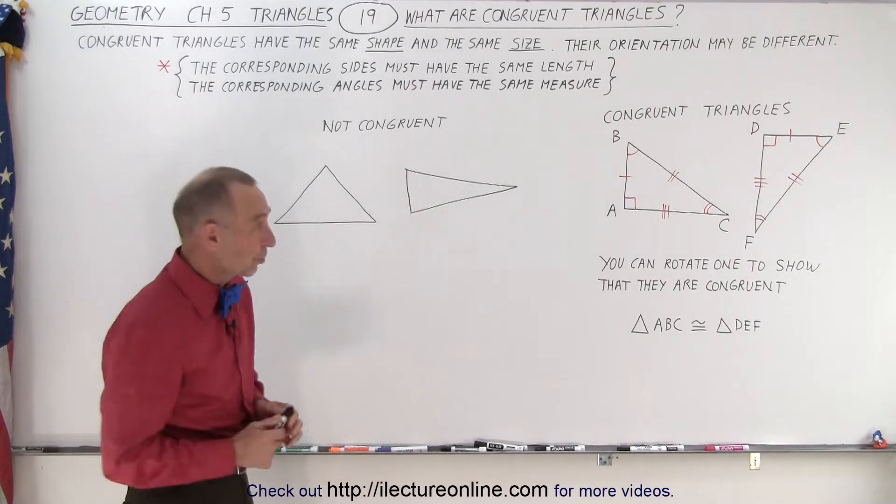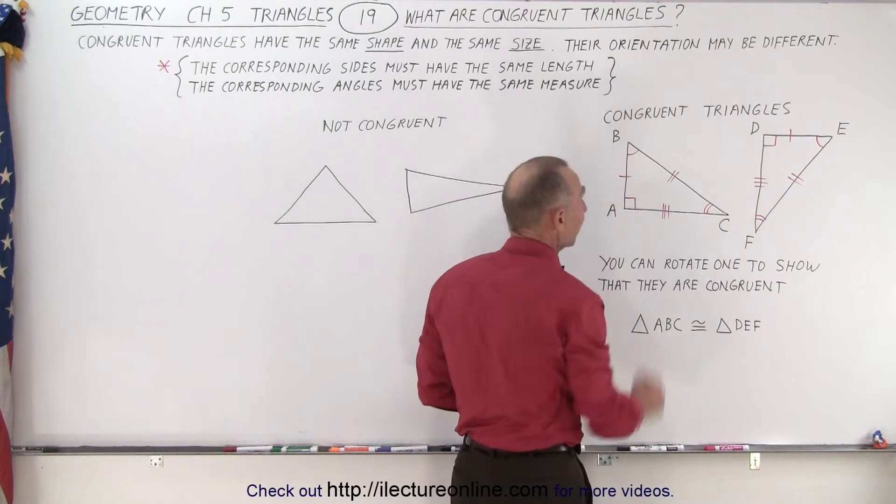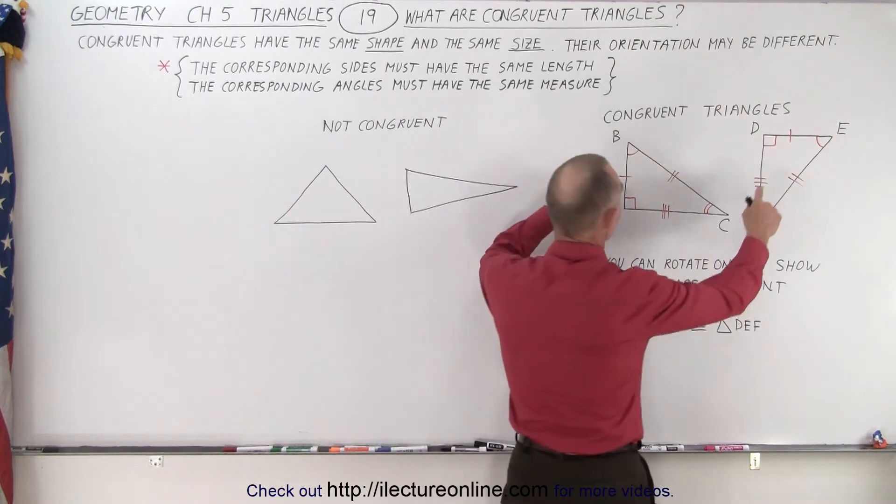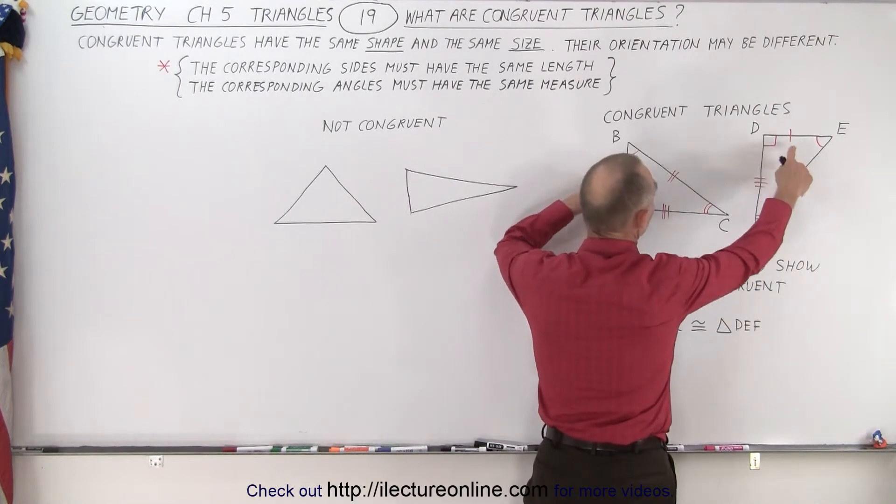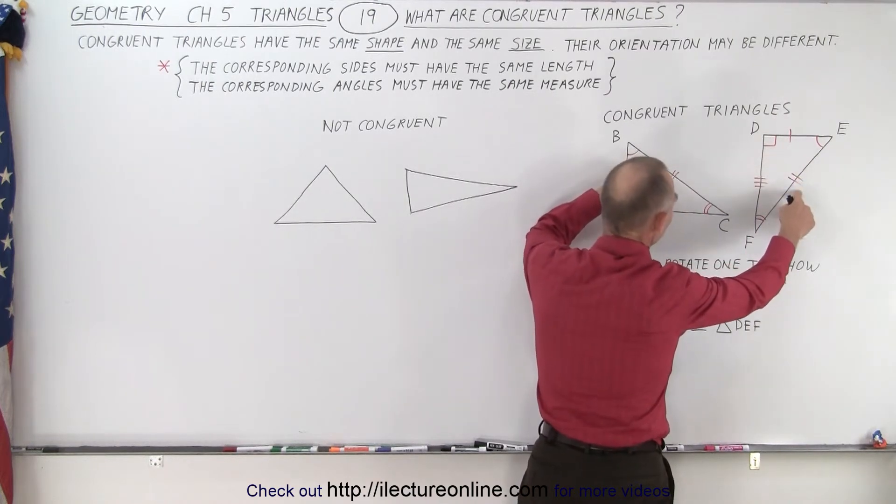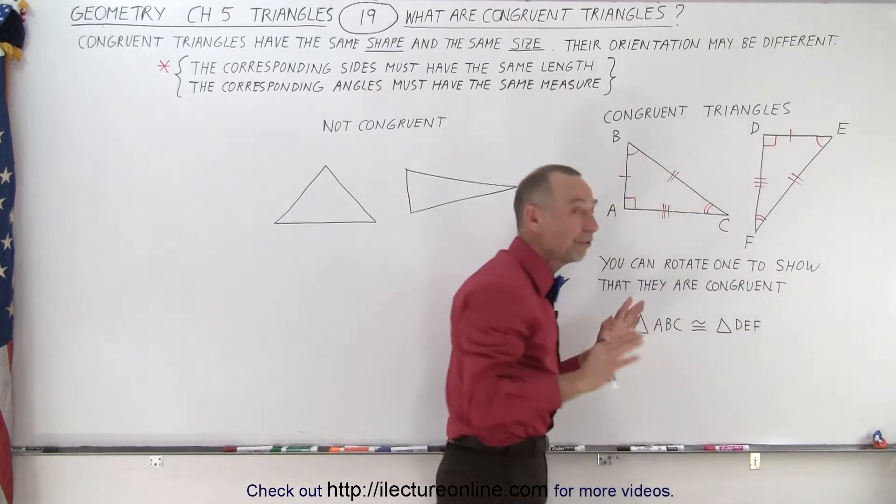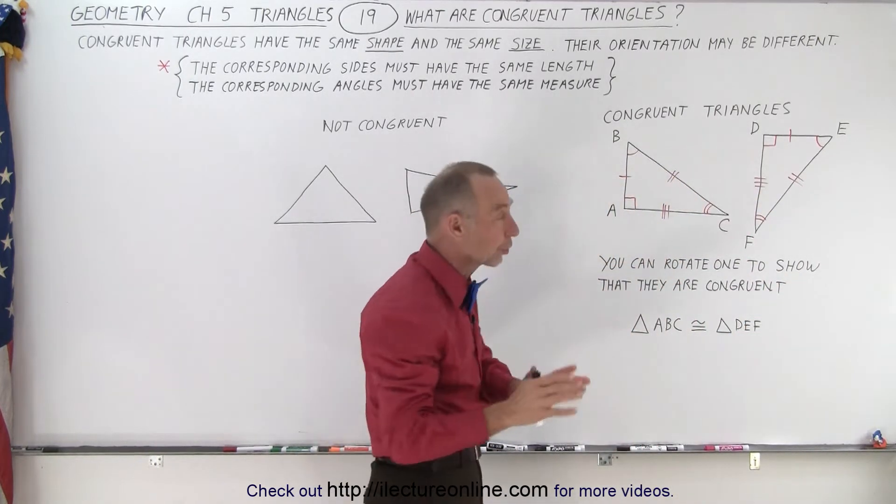Sometimes it's better to take a look at a picture. So let's take a look here. Here we have two triangles. The claim is that they're congruent. Now notice that these two sides have the same length. These two sides have the same length, and these two sides have the same length. That alone is sufficient to say that the two triangles are congruent.